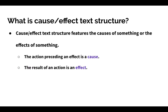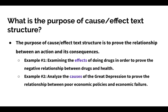Cause-effect text structure is exactly as it sounds. It features the causes of something or the effects of something or both. An action preceding an effect is its cause, and the result of an action is an effect. The purpose of cause-effect text structure is to prove the relationship between an action and its consequences.